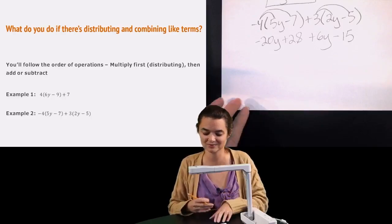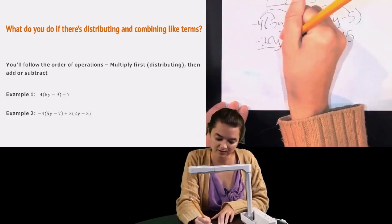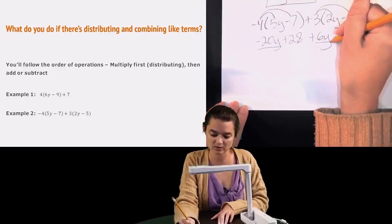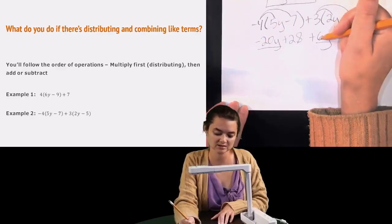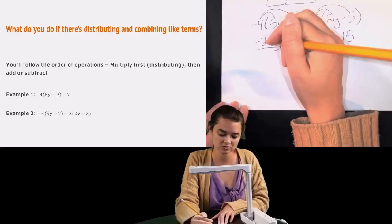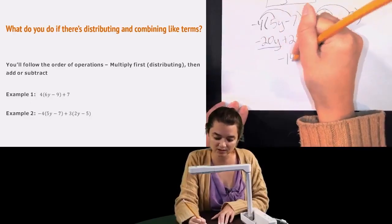Now that I've done all of my distributing, then I can combine some like terms. So I can combine my negative 20y with my 6y. Negative 20 plus 6 is negative 14. So negative 20y plus 6y would be negative 14y.